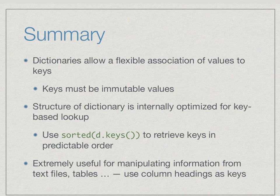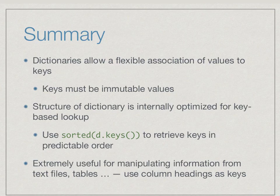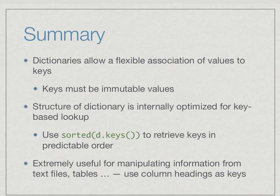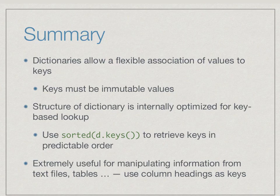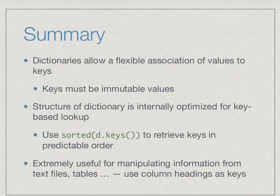To summarize: a dictionary is a more flexible association of values to keys than a list. The only constraint is that all keys must be immutable — you cannot use lists or dictionaries as keys, but you can have nested dictionaries with multiple levels of keys. Use d.keys() and d.values() to cycle through contents, but note that key order from d.keys() is not predictable, so sort if needed. Dictionaries make Python especially powerful for manipulating data from text files and CSV tables, making them an essential programming skill.